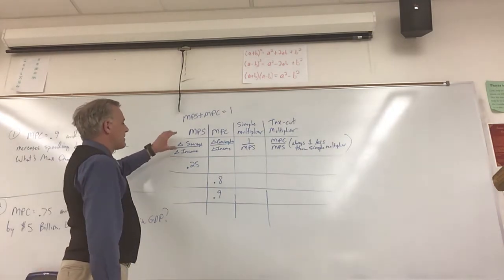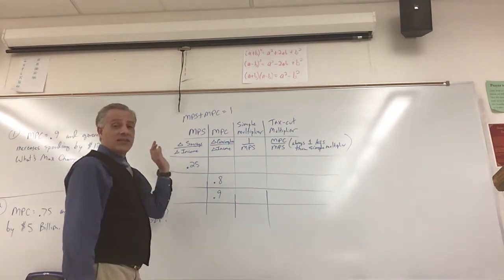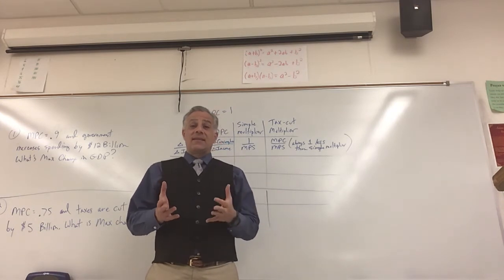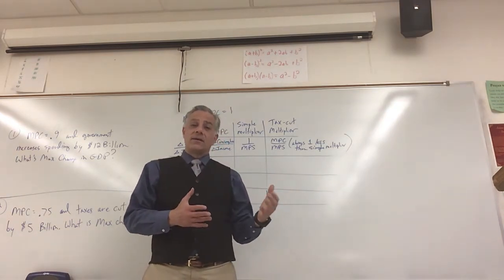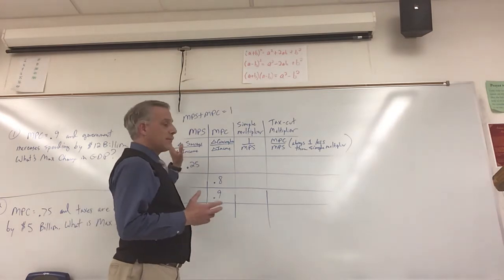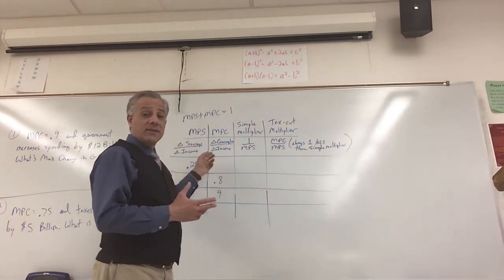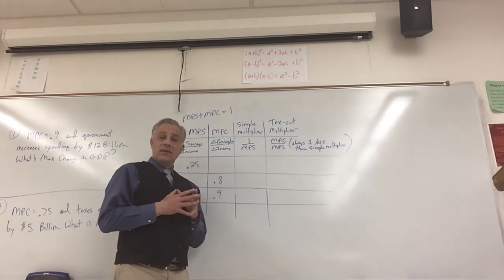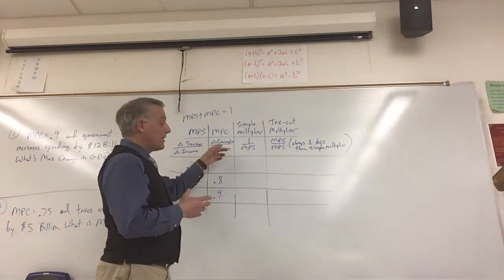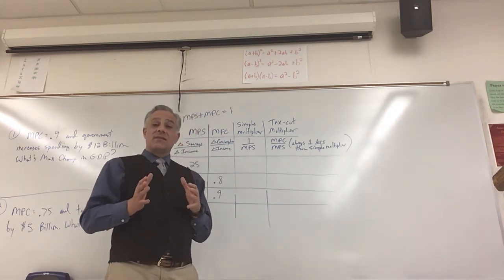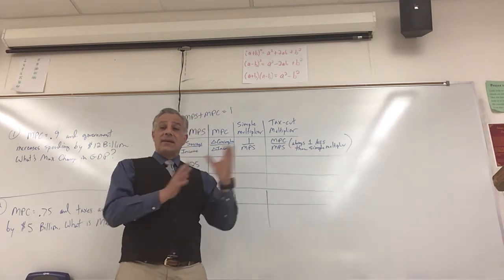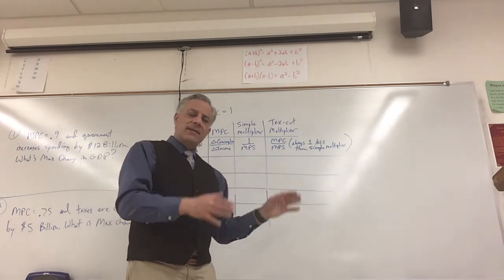First of all, MPS is the change in savings over the change in income. So if we're given a problem where a person gets a $10,000 raise and they save $2,000 more, that would be a 0.2 MPS. So just remember, it's change in savings over change in income. MPC is change in consumption over change in income. So it's not just like the guy makes $100,000 and he saves $20,000. There hasn't been any change. So just remember that if that comes up.